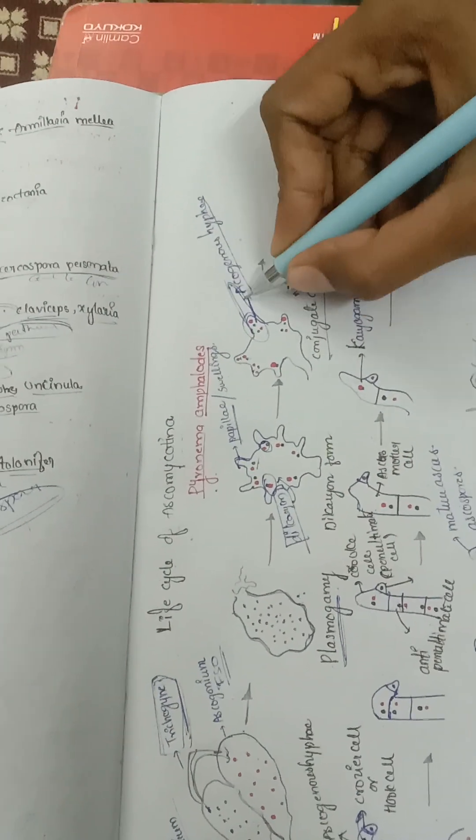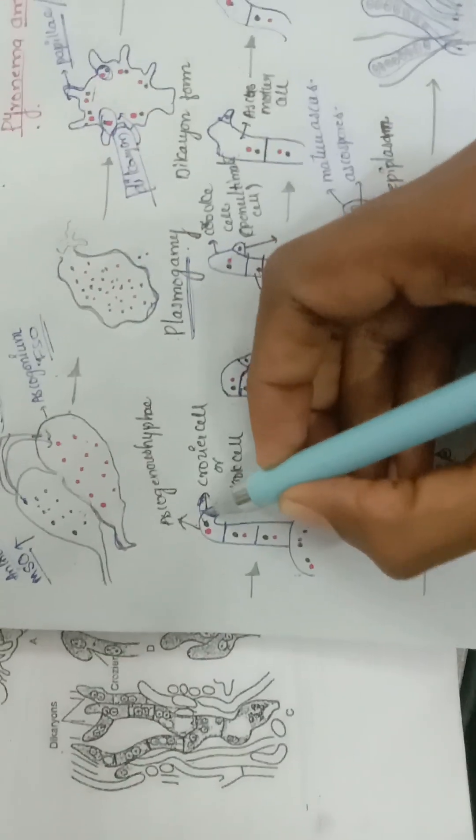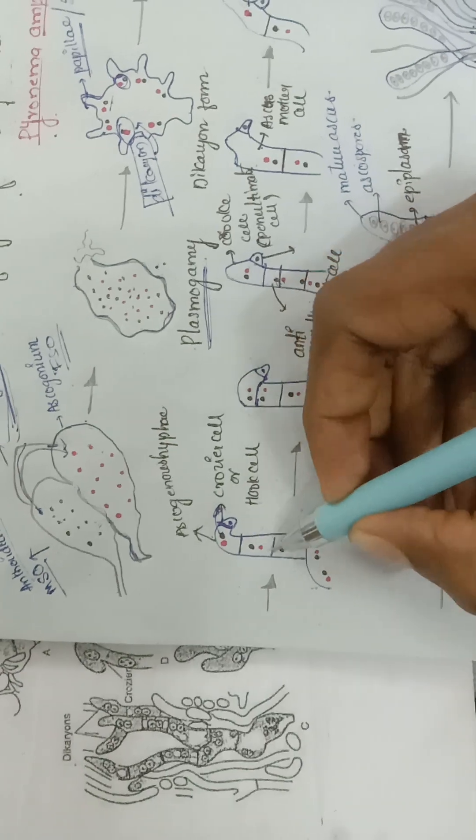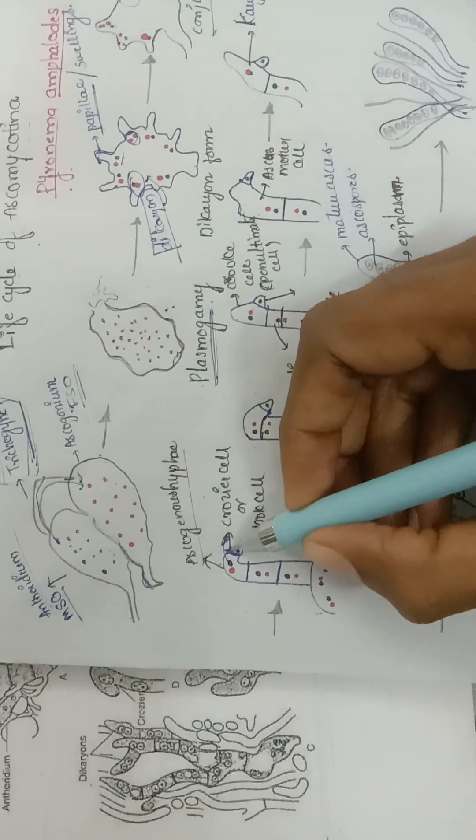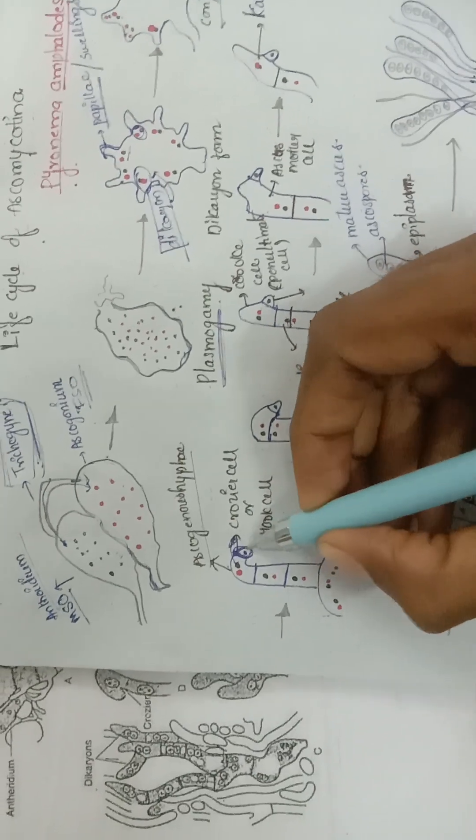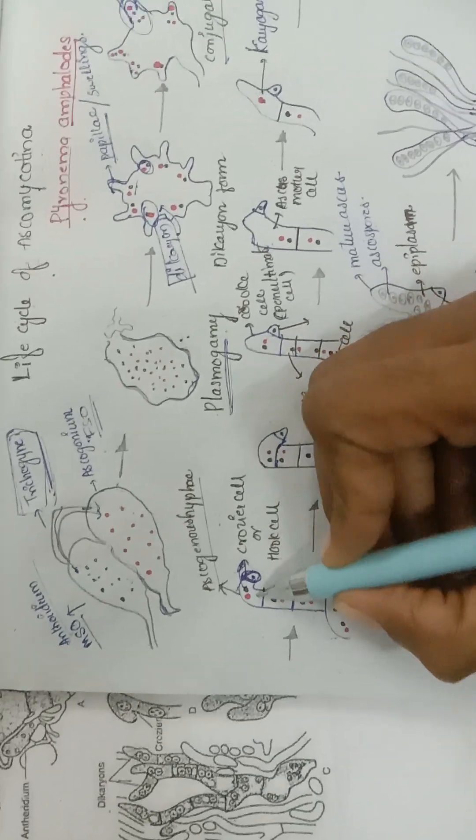The ascogenous hyphae elongate and produce cells as septation takes place. This ascogenous hyphae has a penultimate cell—the last cell is uninucleate and all other cells are binucleated.